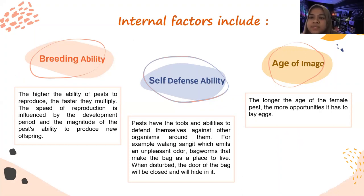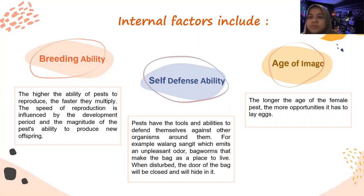Self-defense ability. Pests have the tools and abilities to defend themselves against other organisms around them. For example, Walang Sangit, which emits an unpleasant odor. Backworms use their back as a place to live. When disturbed, the door of the back will be closed and they will hide in it.